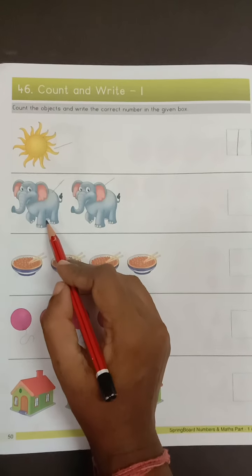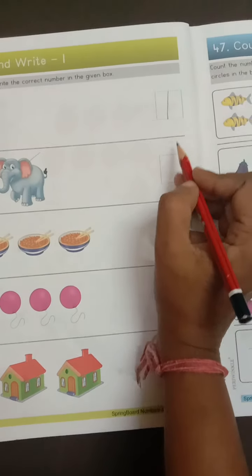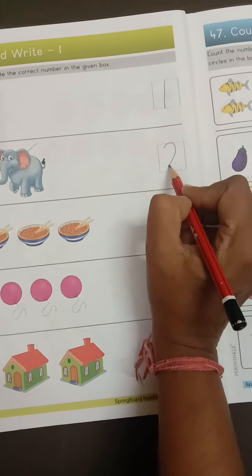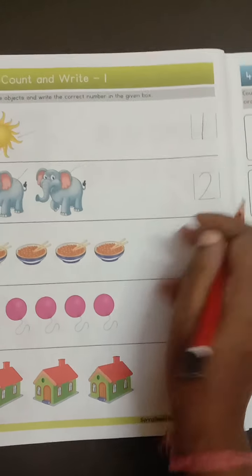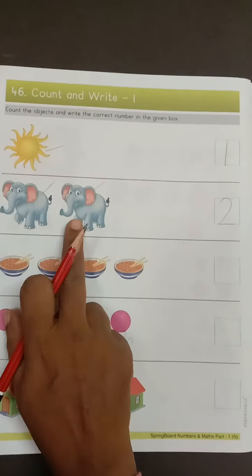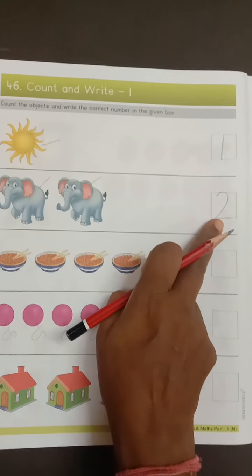How many elephants? Two. So write number two in the box. There are two elephants, so you have to write number two here.